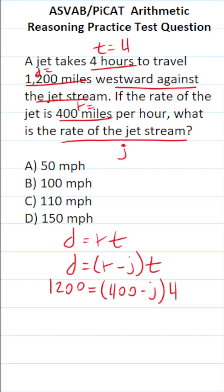Let's solve this equation for J. To start, divide both sides by four. This crosses out. 1,200 divided by four is 300.